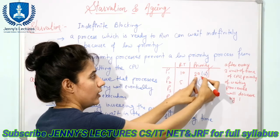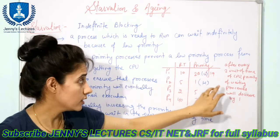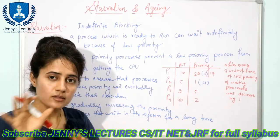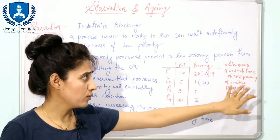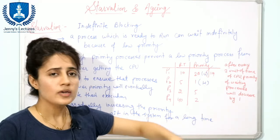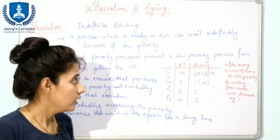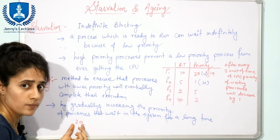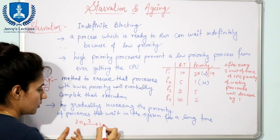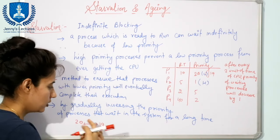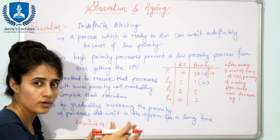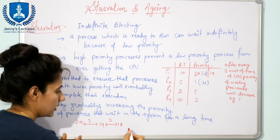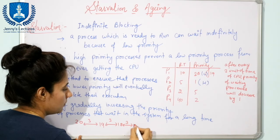If you decrease the priority number from 20 to 19, you can say the priority is ultimately increasing. If you are taking the case that higher the number is higher the priority, then you would write that after every three minutes of CPU time the priority number of the waiting processes will increase by one. Suppose at some point the priority number is 20; after three units of time it becomes 19, then 18, then 17.